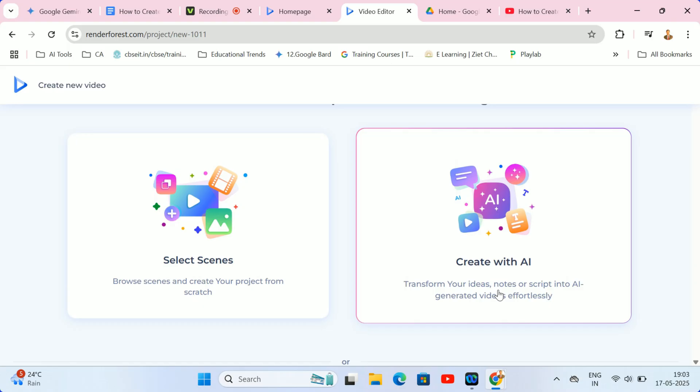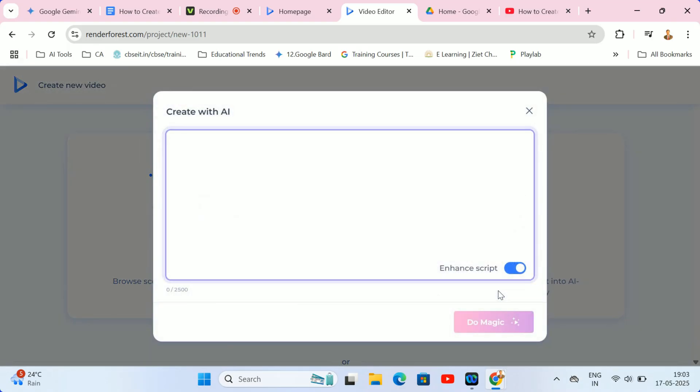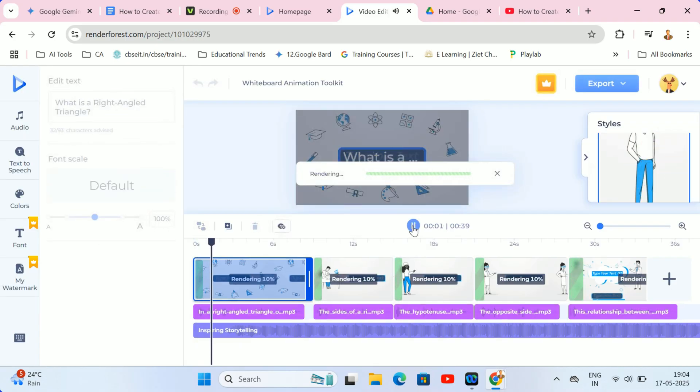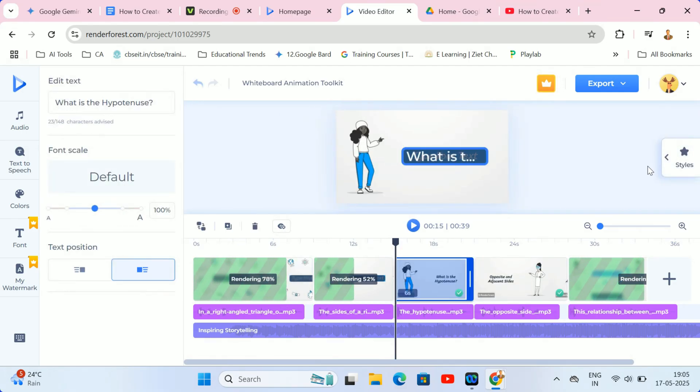Let's take a simple concept. Something like, illustrating the relationship between the sides of a right-angled triangle with clear diagrams. For Class 9 CBSE students as per Insert. Just give that idea to Renderforest and watch as the AI works its magic. It will generate a full video outline, write the script, create the visual storyboard, and even provide the voice narration.